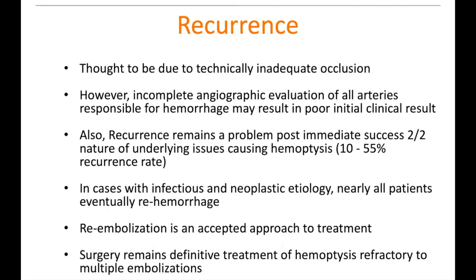Regarding recurrence, it was once thought to be due to technical difficulties, but most often it's because of incomplete angiographic evaluation of all arteries involved, or simply because the underlying disease is not fixed by embolization. In cases of infectious and neoplastic etiology, nearly all patients re-hemorrhage. Re-embolization is possible, but this is not definitive treatment — surgery would be. Bronchial artery embolization is there to manage the emergent or urgent situation.